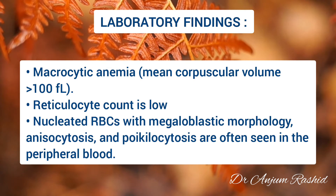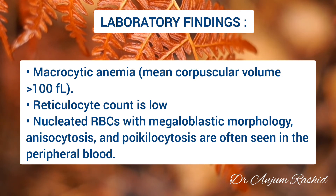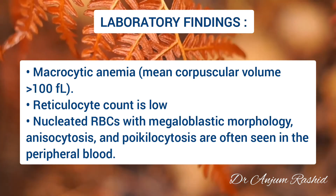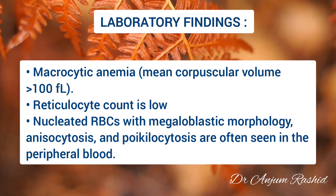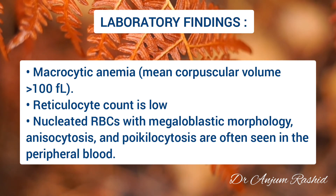Regarding laboratory findings, there is macrocytic anemia — that is, MCV or mean corpuscular volume is increased. Reticulocyte count is low. On peripheral blood film, there are nucleated RBCs with megaloblastic morphology, and there is anisocytosis and poikilocytosis, meaning variation in the size and shape of RBCs.